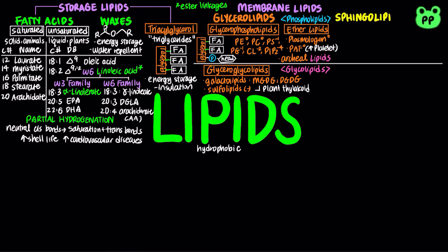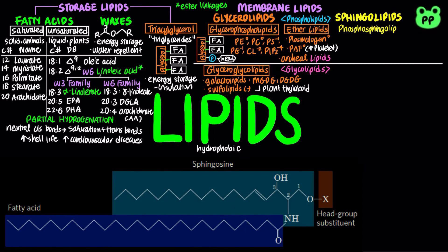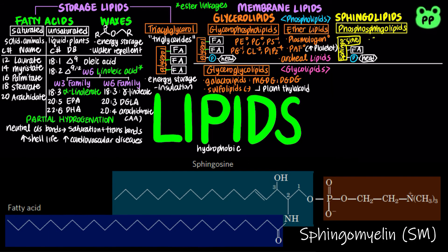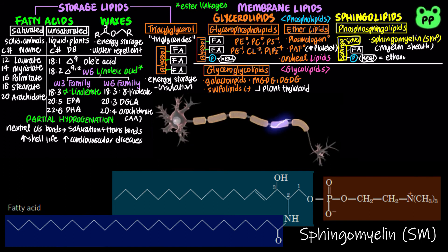The second main type of membrane lipids are sphingolipids, which also have a polar head group with two nonpolar tails. One of the nonpolar tails is part of the sphingosine backbone. The only type of phosphosphingolipid is sphingomyelin, which contains choline or ethanolamine as its polar head group and is neutral at physiological pH.